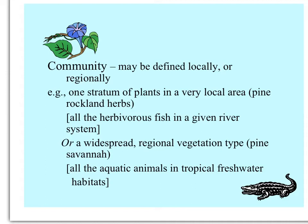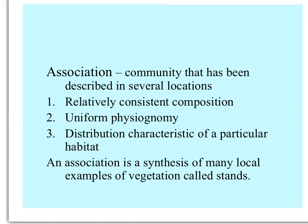Or, perhaps a widespread regional vegetation type, like pine savanna — this would be the bigger picture. For animals, an example would be all of the aquatic animals in tropical freshwater habitats.